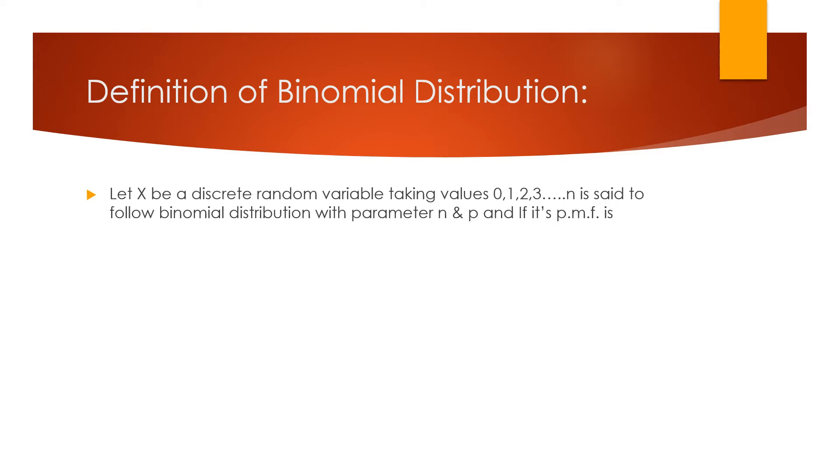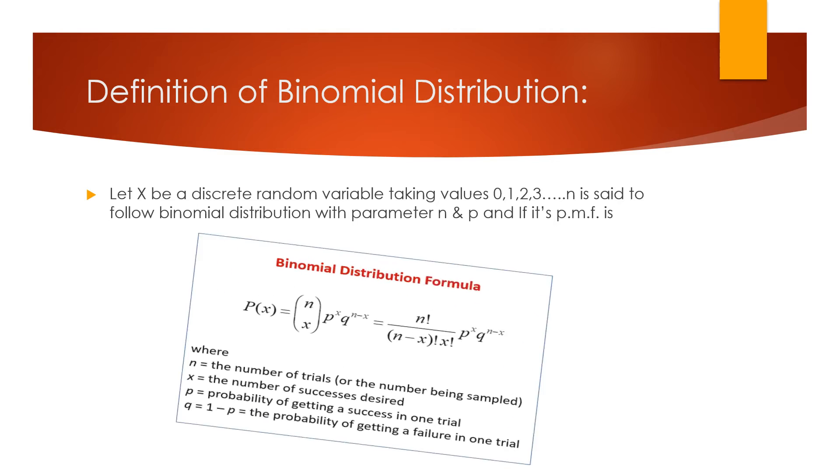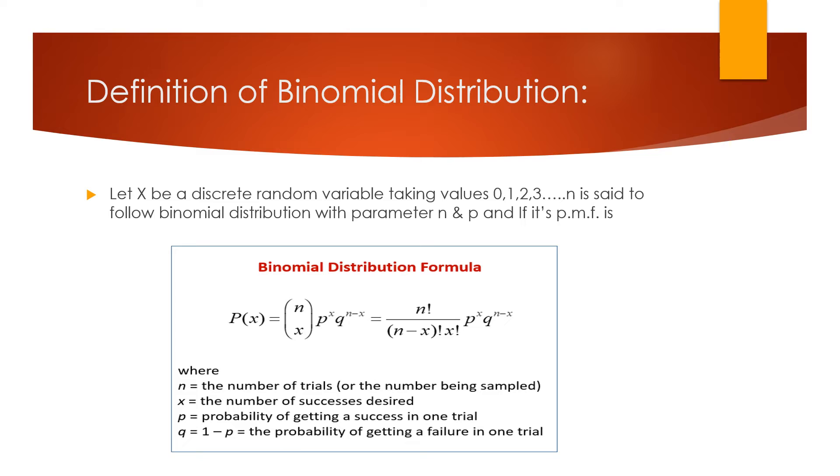Let X be a discrete random variable taking values 0, 1, 2, 3 up to n. It is said to follow binomial distribution with parameter n and p if its PMF (probability mass function) is P(X=x) equals nCx p raised to the power x q raised to the power n minus x.